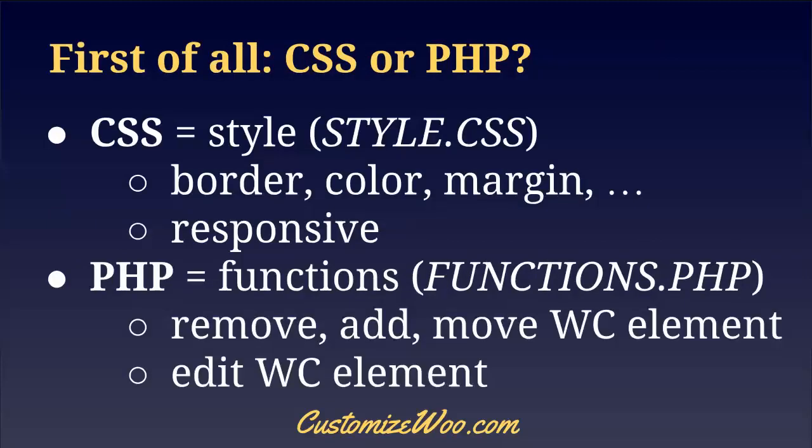Before moving on to the child theme, I want to cover the difference between CSS and PHP — this will come very useful later on. If you're looking to customize the border, background, or color of something, that's style, which means CSS, and it goes into the style.css file of your child theme. On the other hand, if you're looking to remove a WooCommerce element, add a new element, or edit an add-to-cart button label, then that's functionality, which means PHP, which means the functions.php file of your child theme.